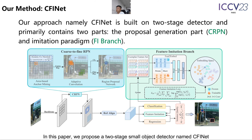In this paper, we propose a two-stage small object detector named CFINet, based on the proposal generation part — the coarse-to-fine RPN — and an imitation paradigm, the feature imitation branch.